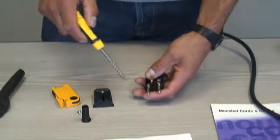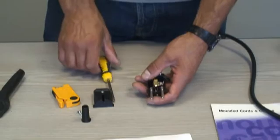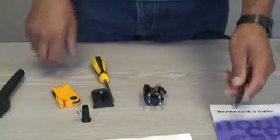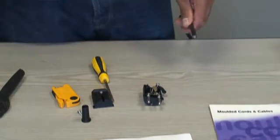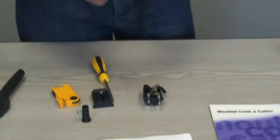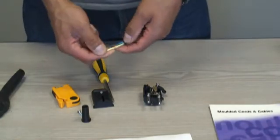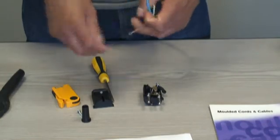Now we have three different terminals in here: live, neutral and earth. For those of you who don't know, European cables use a standard European color coding, which I'll show you on the cable here. Green and yellow is earth, blue is neutral and brown is live.